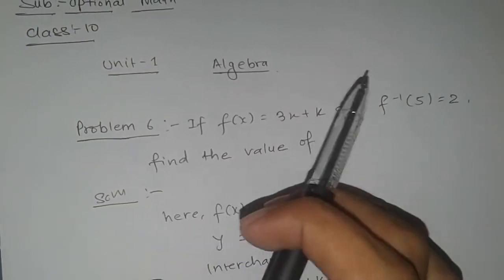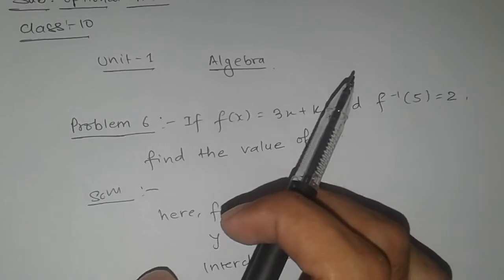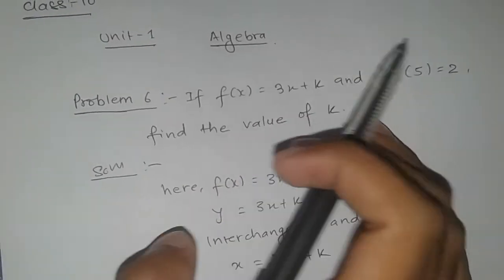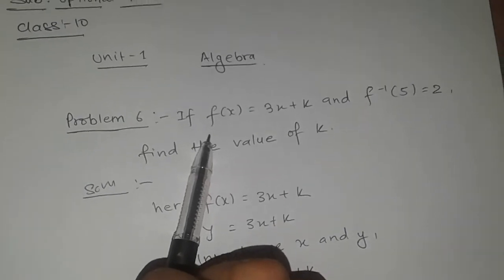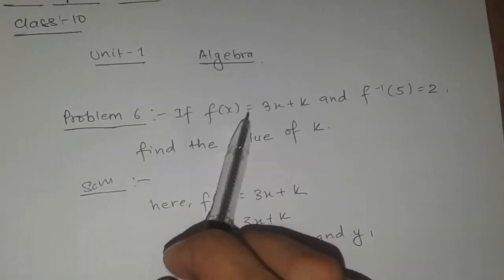We have already solved up to problem 5. The inverse function is solved by six types, and this is the last one - the last type of the inverse function. We'll move toward the composite function next.